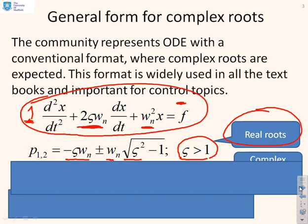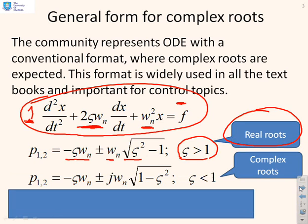Conversely if ζ is less than one, then ζ squared will be less than one and what's in the square root becomes a negative number. I've written one minus ζ squared with a j outside, so you have two complex roots: -ζωₙ ± jωₙ√(1-ζ²). This ζ tells us whether we have real or complex roots.